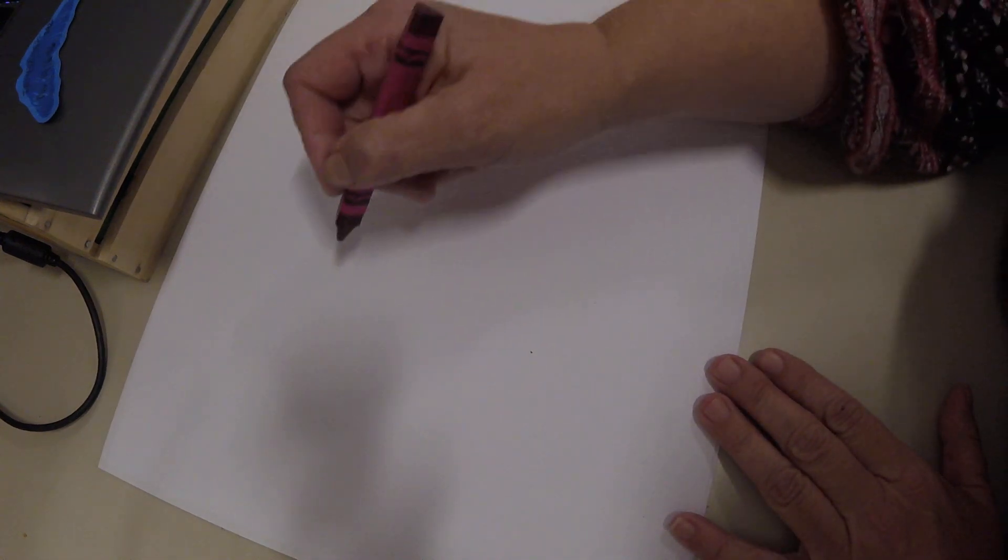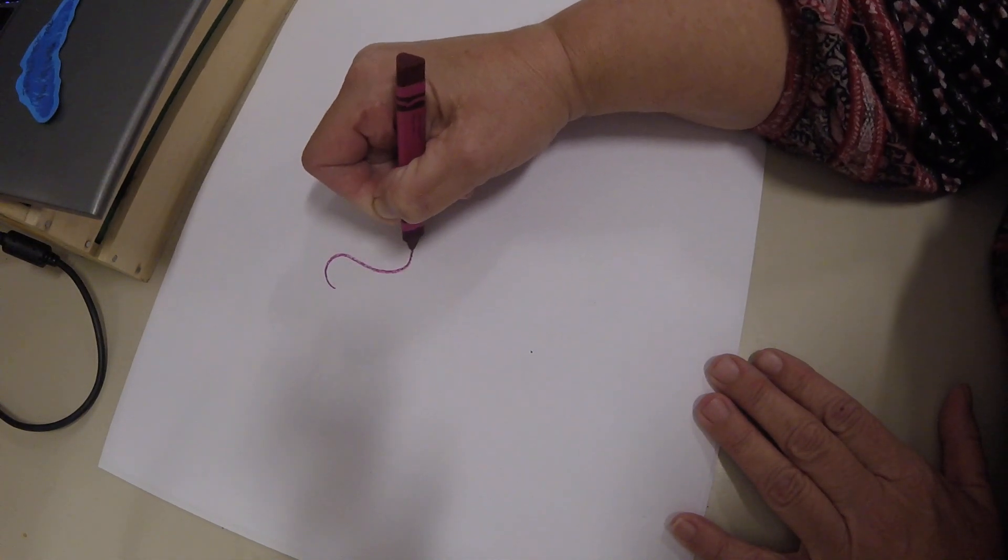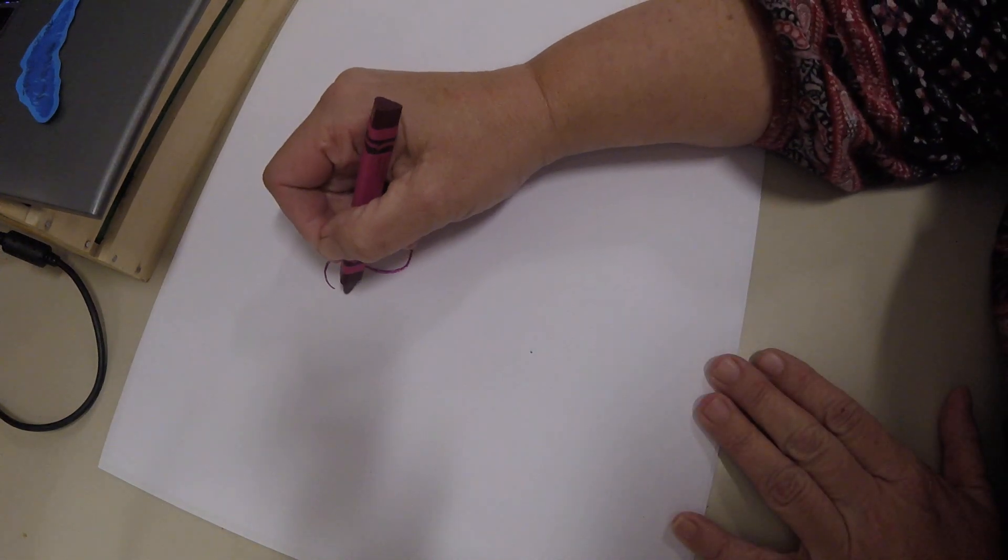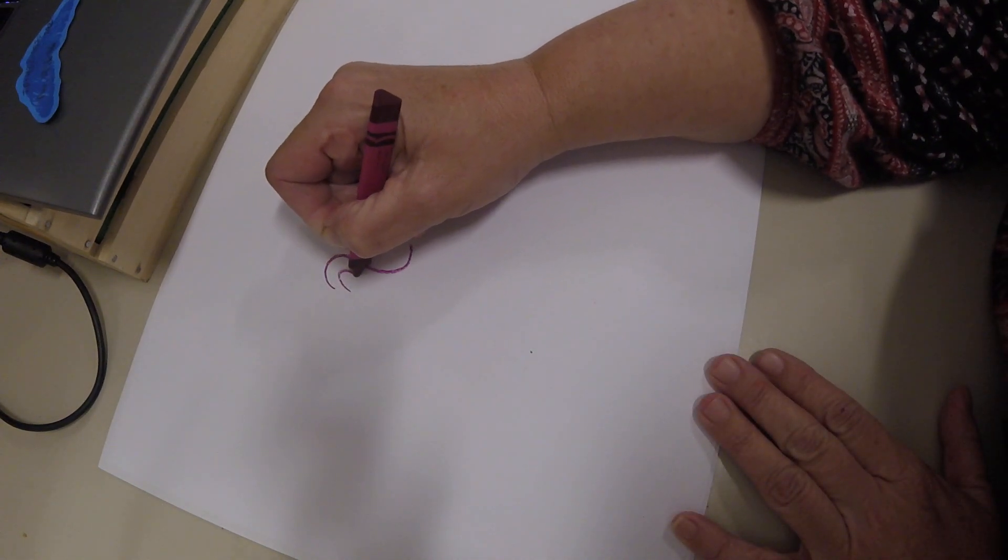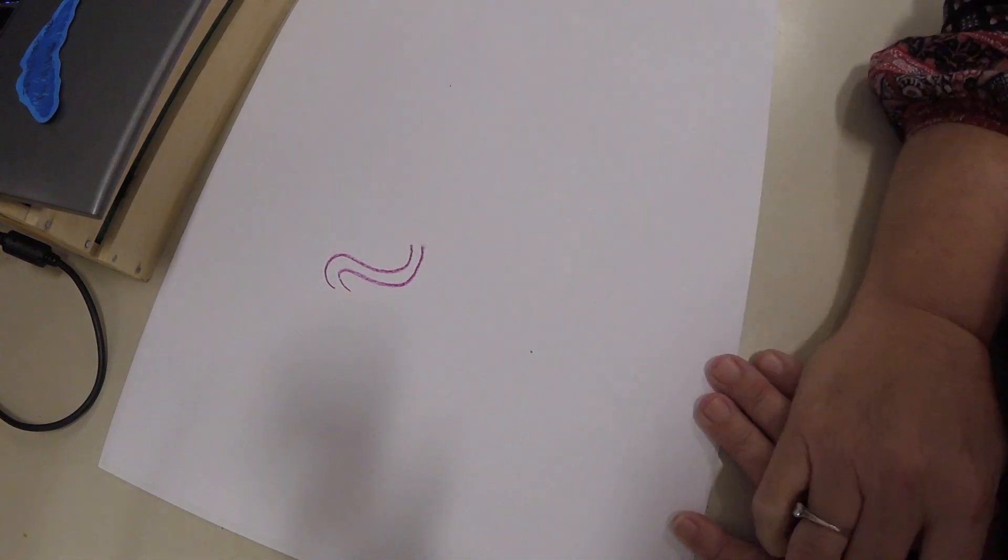Hi guys, today we will be drawing an elephant. We're going to start by making a backwards S, and then you're going to mirror that backwards S with another backwards S right next to it.